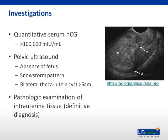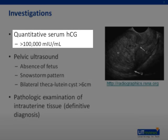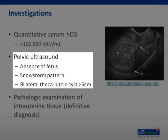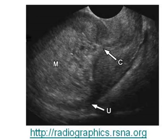Because HCG levels are extremely high in complete moles relative to normal pregnancy values and correlate with tumor size, they can be used to diagnose and assess treatment effectiveness. A serum HCG level above 100,000 is indicative of a molar pregnancy. On pelvic ultrasound, no fetus or amniotic fluid is seen. Instead, the intrauterine tissue has a snowstorm appearance due to the swelling of chorionic villi. In the figure on the left, we see the classically described snowstorm appearance of a complete mole in the region labeled M. The scan may also reveal large bilateral theca-luteal cysts.